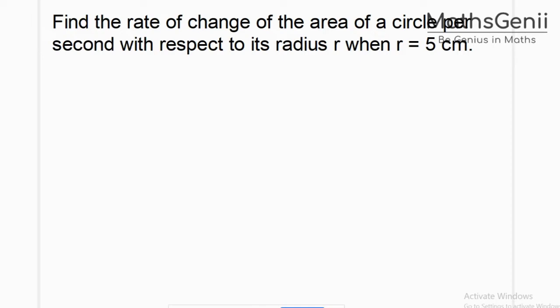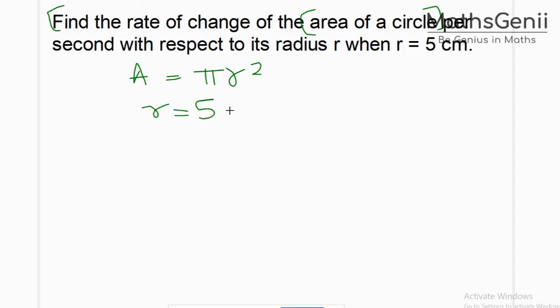Find the rate of change of area of a circle. Do I know the area of a circle? Yes — A equals pi r squared. Per second, with respect to its radius, when r equals 5 centimeters.